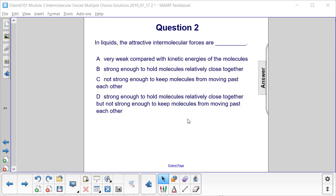They can slip past each other, but they're not so weak that they're not attracted to each other at all. So the answer that addresses all three of those things is answer choice D.